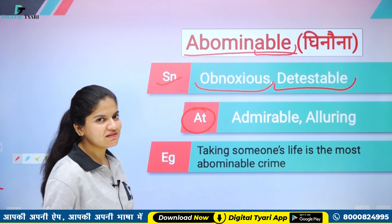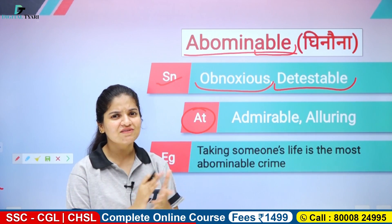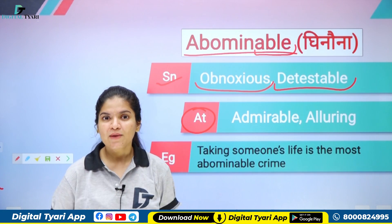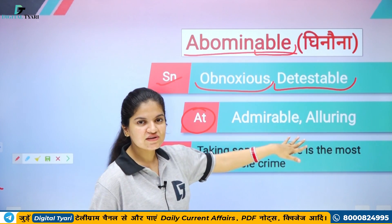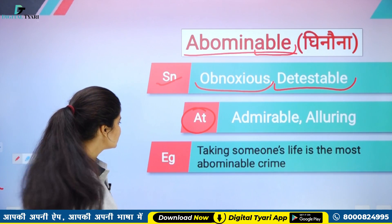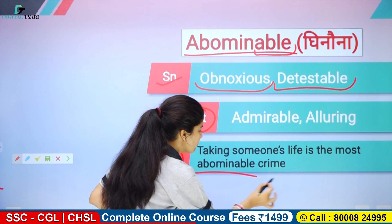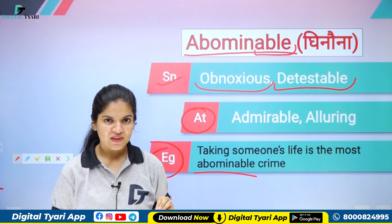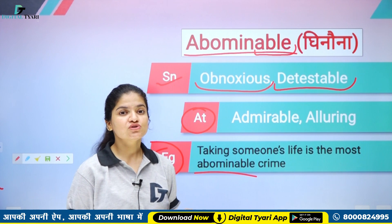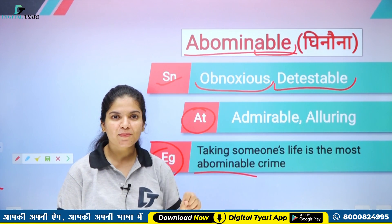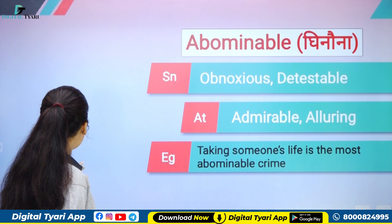Iske antonyms dekhte hain — abominable yaani ghinona, toh iske antonyms kya honge? Admirable — bahut hi achha lagne wala. Alluring — alluring ka bhi matlab beautiful hota hai. Pleasant, beautiful — ye sare iske antonyms, yani opposite words ho jayenge. Example: 'Taking someone's life is the most abominable crime' — sabse ghinona gunah hai. Uske alaawa ek aur: 'Prisoners have to live in abominable conditions' — jo prisoners hote hain, unko bahut hi ghinonni conditions mein rehna padta hai. Chaliye toh abominable word ho gaya — I hope yaad rahega aapko.